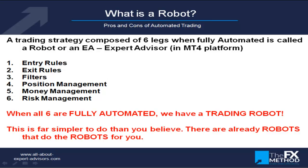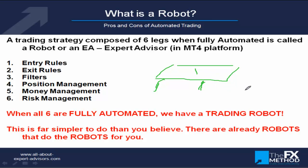So let's define what a robot actually is. I compare it to a table: for it to be stable, a table needs at least three legs. A trading system, to be robust and fully automated, should have at least three parts out of six possibilities. You should have either entry rules, exit rules, and filters — or entry rules, exit rules, and money management. Ideally, if you have more legs and they're well set, the table is going to be more stable.